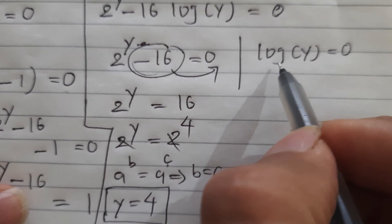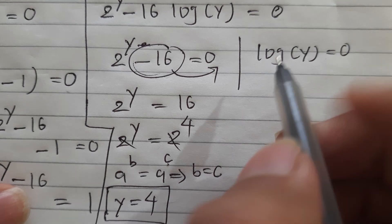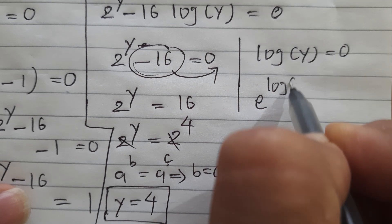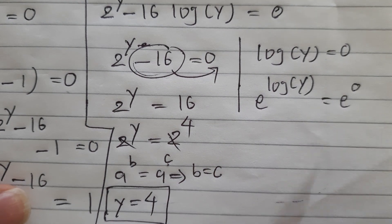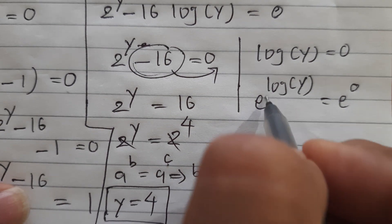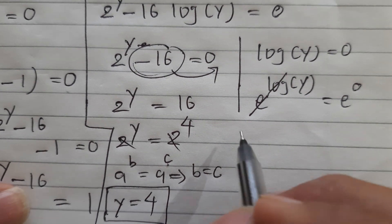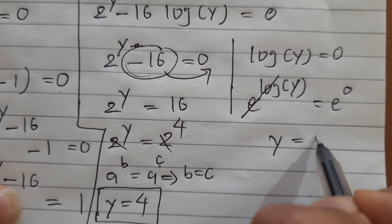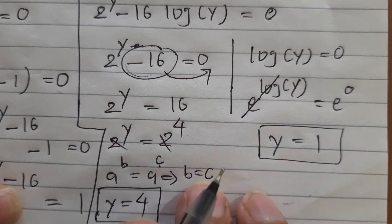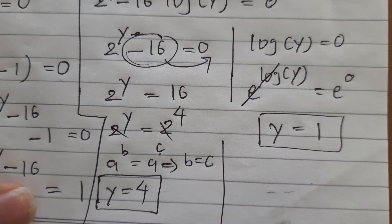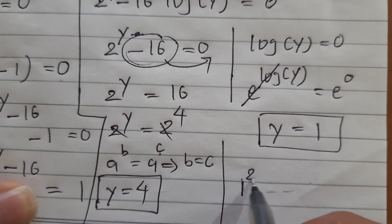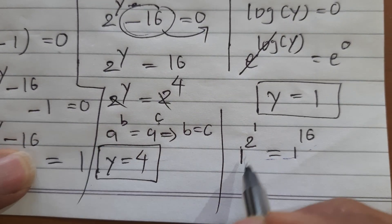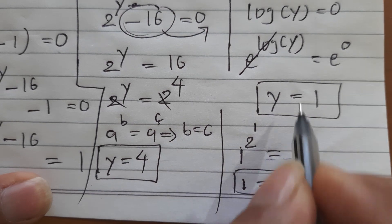For log y equals 0, we apply e to both sides: e to the power of log y equals e to the power 0. The e and log cancel, giving y equals e to the 0, which is 1. So y equals 1 is another solution. Verifying: 1 to the power of 2 to the power 1 equals 1 to the power 16, which gives 1 equals 1. Correct!